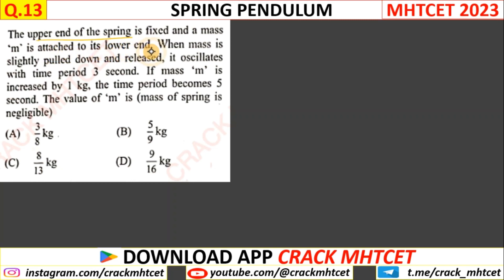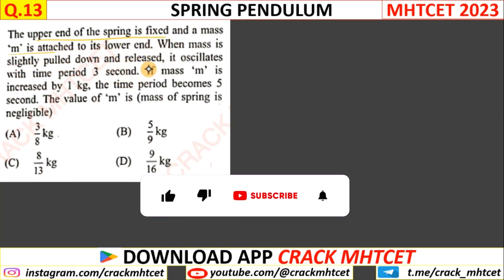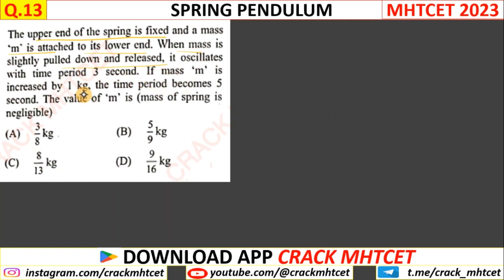What was given in this question? The end of spring is fixed and mass m attached to its lower end. When mass is slightly pulled down and released, it oscillates with time period 3 seconds.